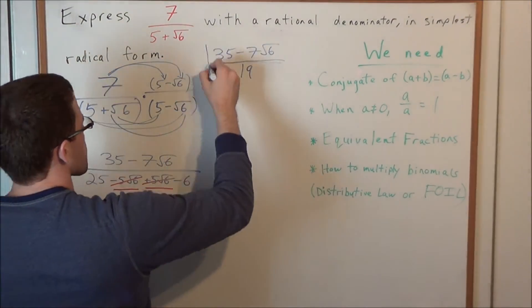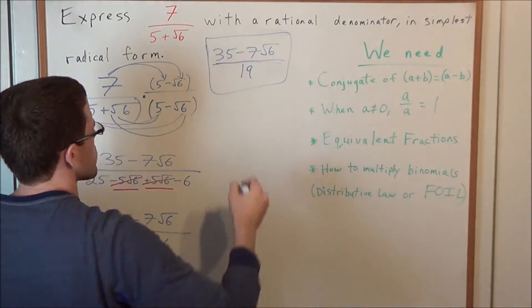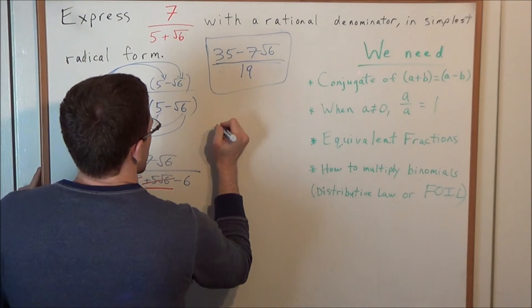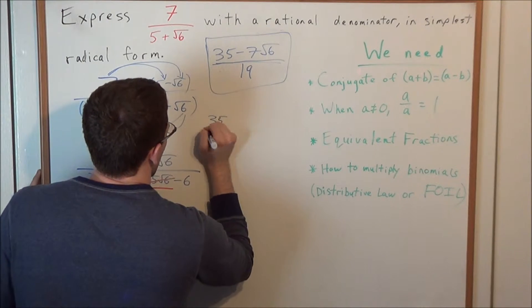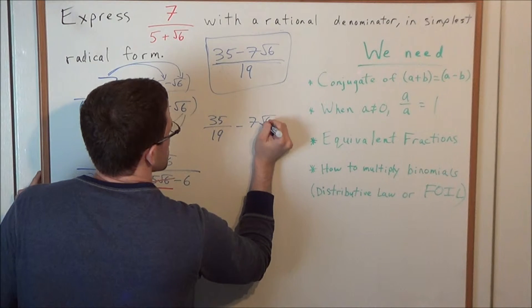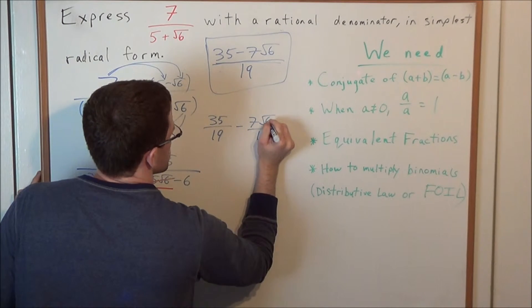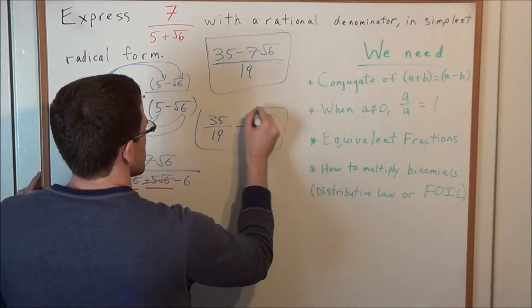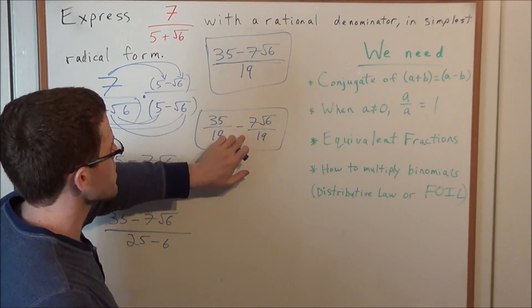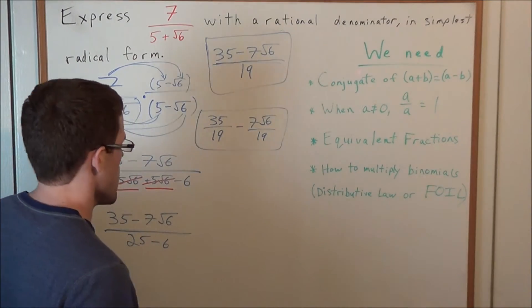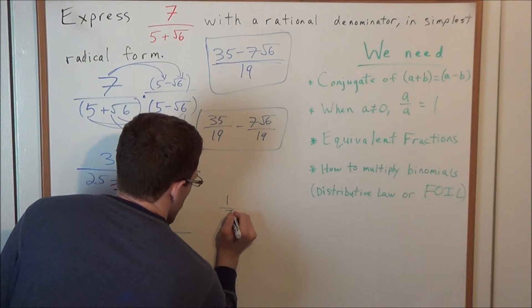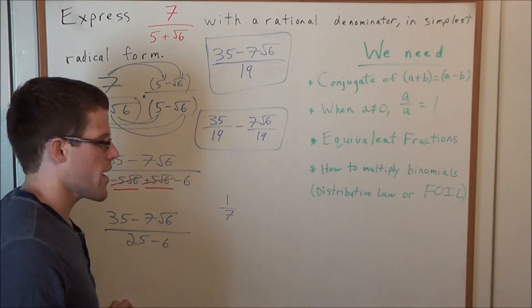Now let's look at an alternate form of this answer, because if this were a multiple choice test, they could put this in a different form. Let's look at the alternate form of 35 over 19 minus 7 radical 6 over 19. This would also be an acceptable answer. Now some students will struggle with the concept of why this fraction can break apart into two fractions like this. But really all this is, if you think back to even as far back as third grade when you first learned how to add fractions...